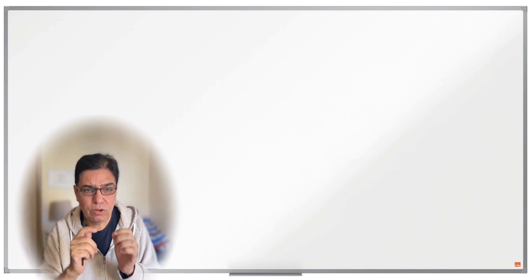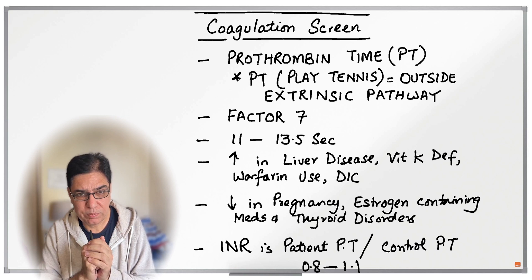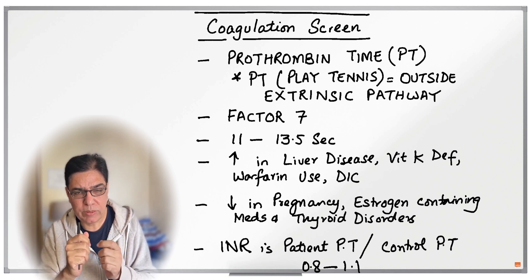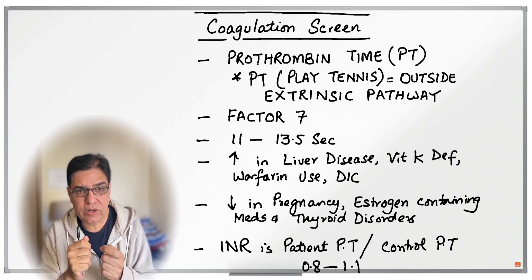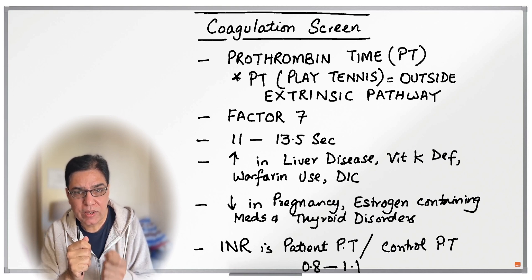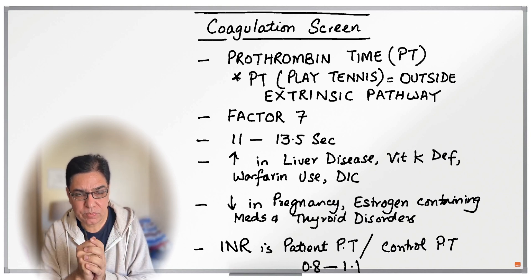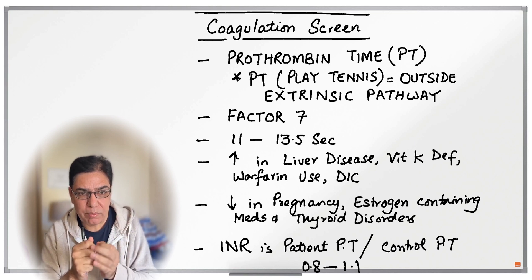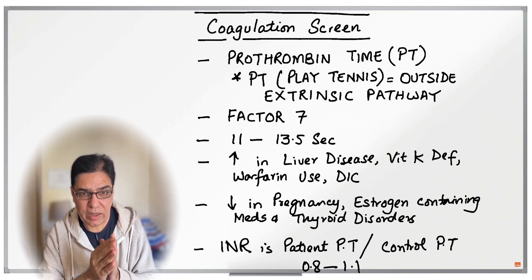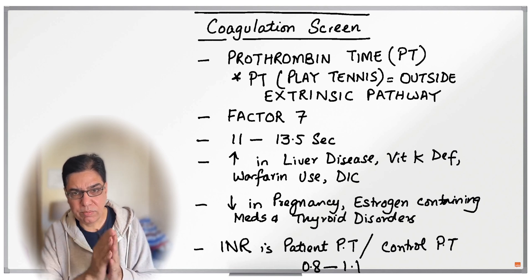The first test in the coag screen is PT or prothrombin time. Prothrombin time is usually between 11 to 13.5 seconds. The acronym PT also stands for 'play tennis,' and tennis is played outside — or extrinsic. So PT or prothrombin time measures the extrinsic pathway, which starts with factor 7 and then continues into the combined pathway.